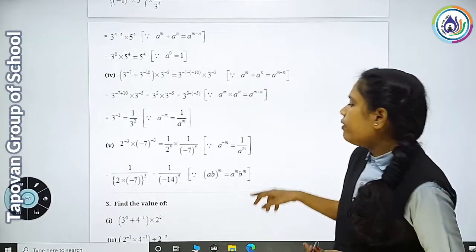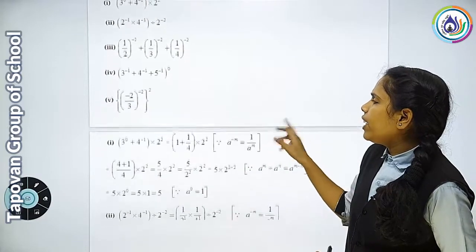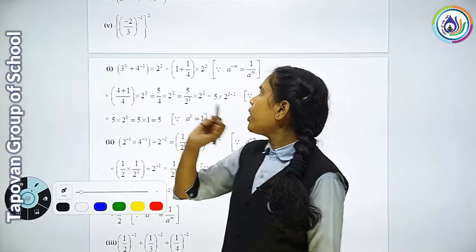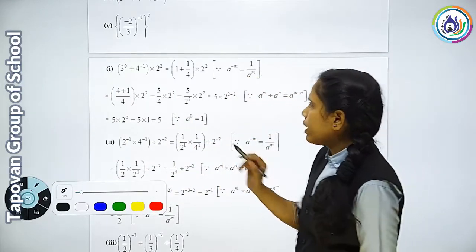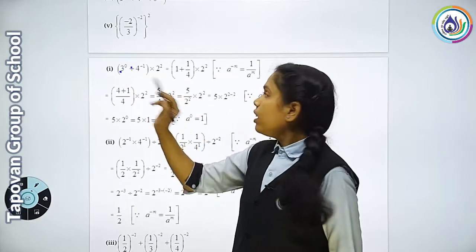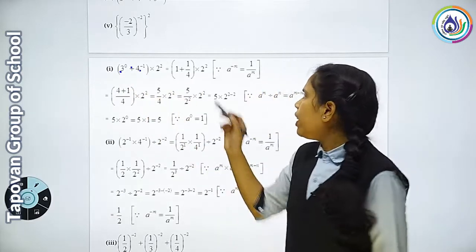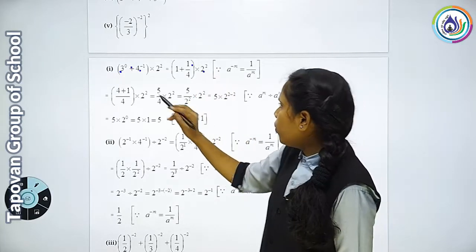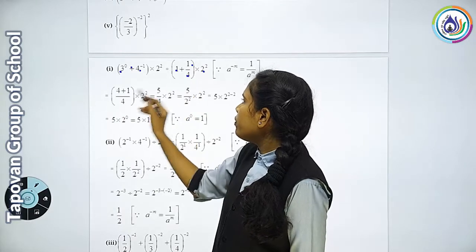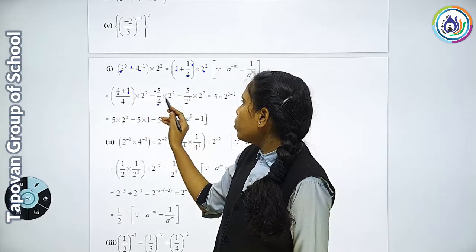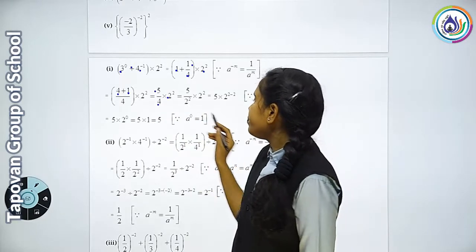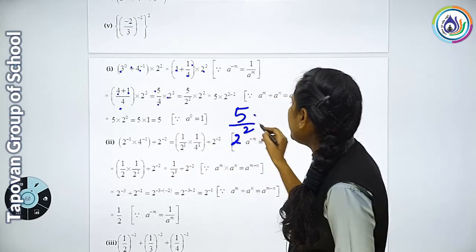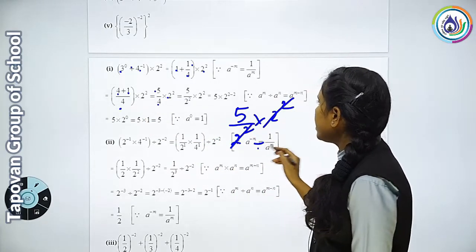Question number 3, find the value. We start with the equation: 3 raise to 0 plus 4 raise to minus 1 into 2 squared. So 3 raise to 0 ki value kitni hogi? 1. 4 raise to minus 1 ki value hogi 1 upon 4, plus kar diya into 2 ka square. So 2 ka square kitna hoga? 4. Yahan per LCM lena padega: 4 vandza 4 plus 1 = 5. So 5 upon 4 into 2 ka square, 4. 4 hai, 2 ka square into 2 ka square — donho cut — answer kitna aaya? 5.